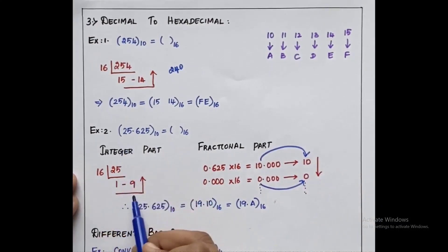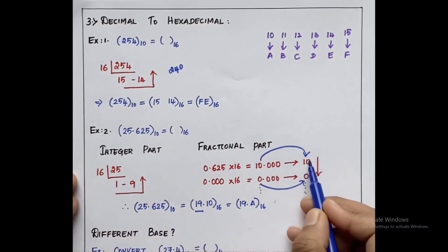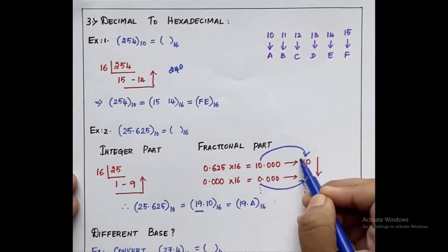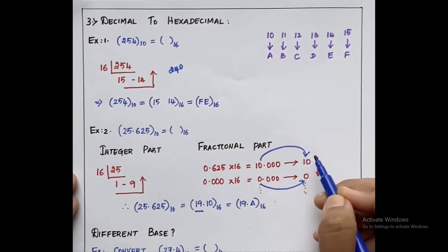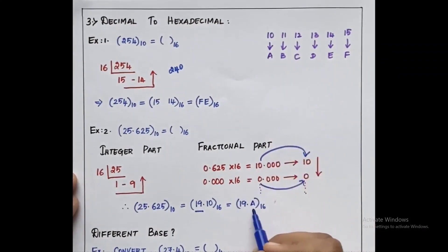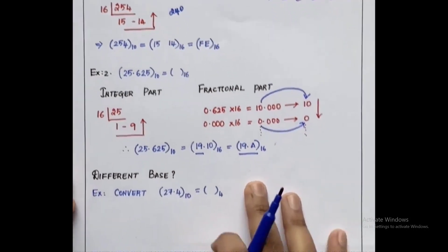For the integer part we got 1 and 9, and for the fractional part we got 10. Now we make the small correction: 10 has to be replaced with the alphabet A as per the rule. So we can write it as 19.A, which is the equivalent value for the given number 25.625.